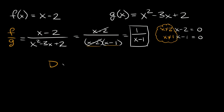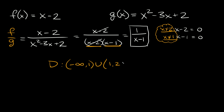We can simplify further: on the top and bottom we have (x minus 2) and (x minus 2), so those cancel out. We're left with 1 over (x minus 1). The domain, since neither original function had restrictions but the combined fraction excludes x equals 1 and x equals 2, is written in interval notation as negative infinity to 1, union 1 to 2, union 2 to infinity.